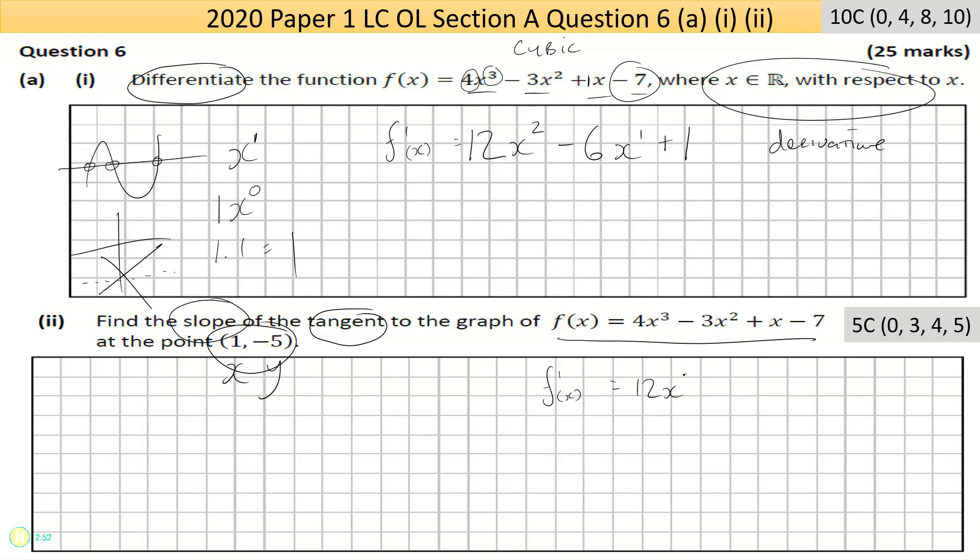We know the slope equation, we just did it in part one, so let me copy it across. Now I know this is finding the slope at this point. There's an x and a y here. If you see here, this only has x's, so if I put the x value, which is 1, in brackets everywhere I see x.